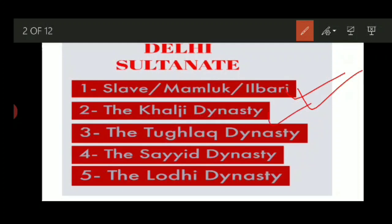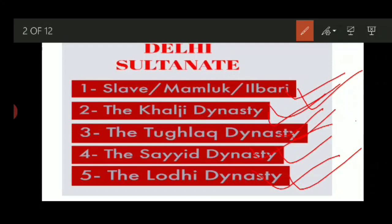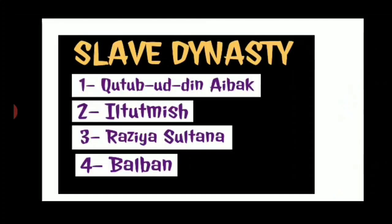The other dynasties were the Khilji dynasty, the Tughlaq dynasty, the Sayyid dynasty, and the Lodi dynasty. These are the five dynasties which came under Delhi Sultanate. For today, we will know about the Slave dynasty, and the rest of the four dynasties will come in separate parts and separate videos. This timeline was very necessary to avoid confusion as we move further.